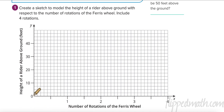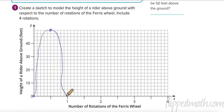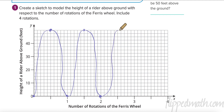At time zero — zero rotations — we're at zero feet. At one full rotation we have to be back where we started. Halfway through that rotation we'll be as high as we can be: 50 feet off the ground. So the graph curves up, then back down. This repeats over and over again — at the next rotation you're back on the ground, halfway through you're at your highest.